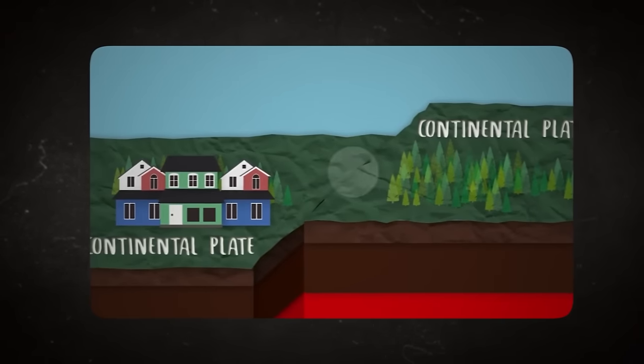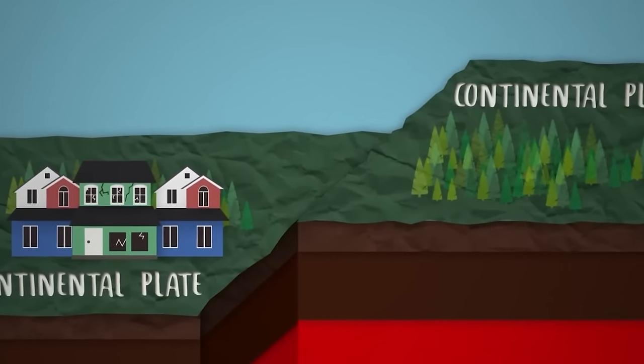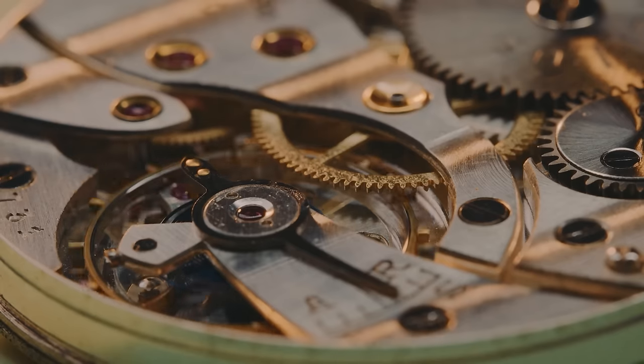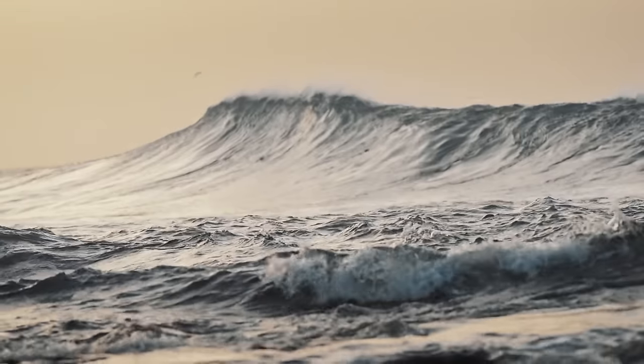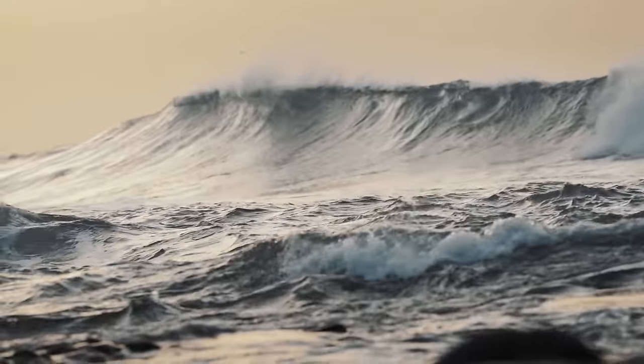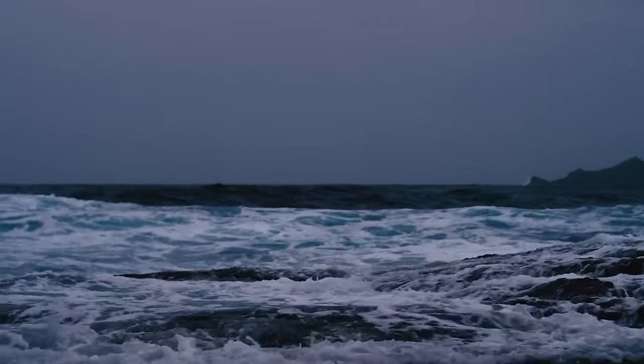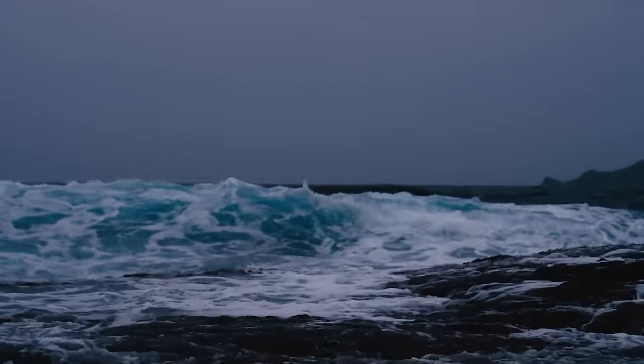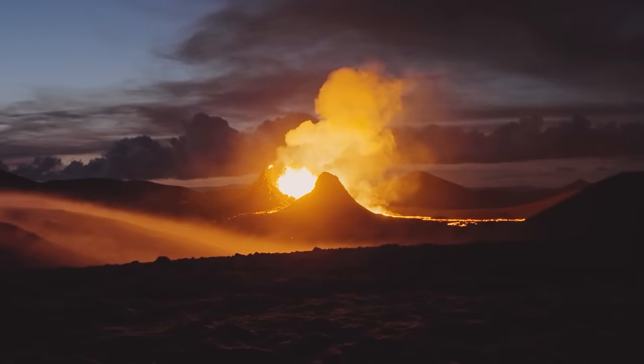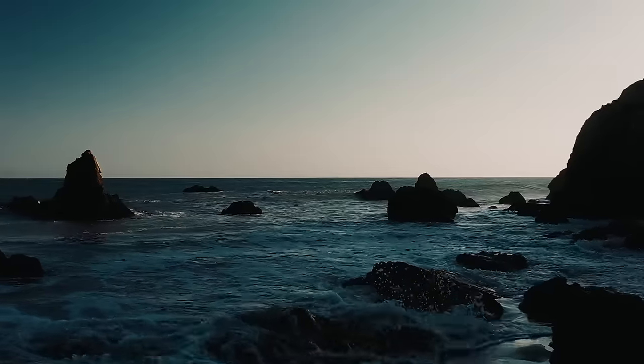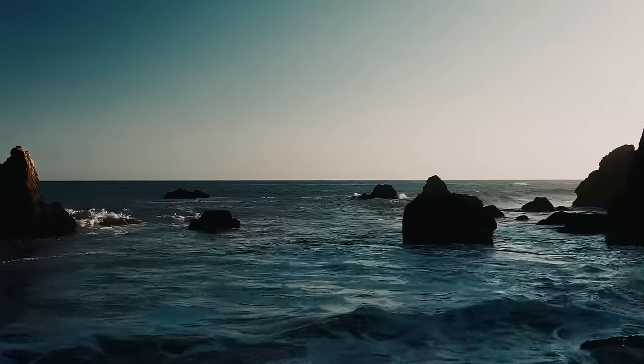To understand this, you need to grasp what tectonic plates are. Many millions of years ago, the Earth was a single landmass surrounded by a vast ocean, forming one giant continent known as Pangea and a single ocean called Panthalassa. Over time, the Earth's outer crust heated and cooled, breaking apart into the continents and oceans we know today.